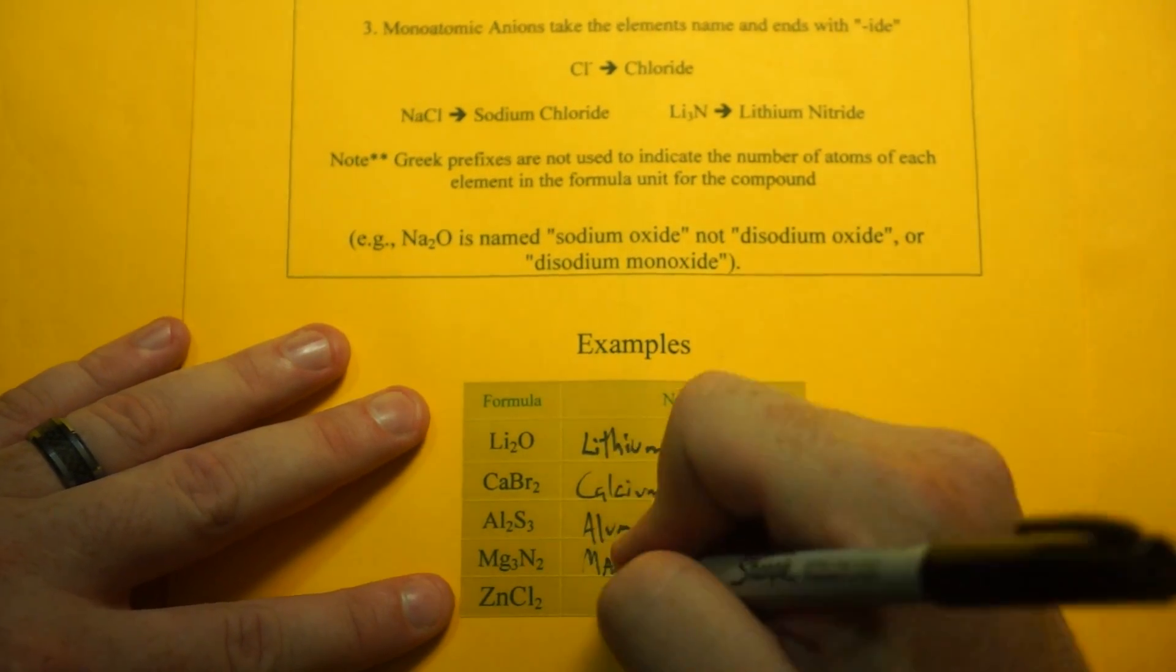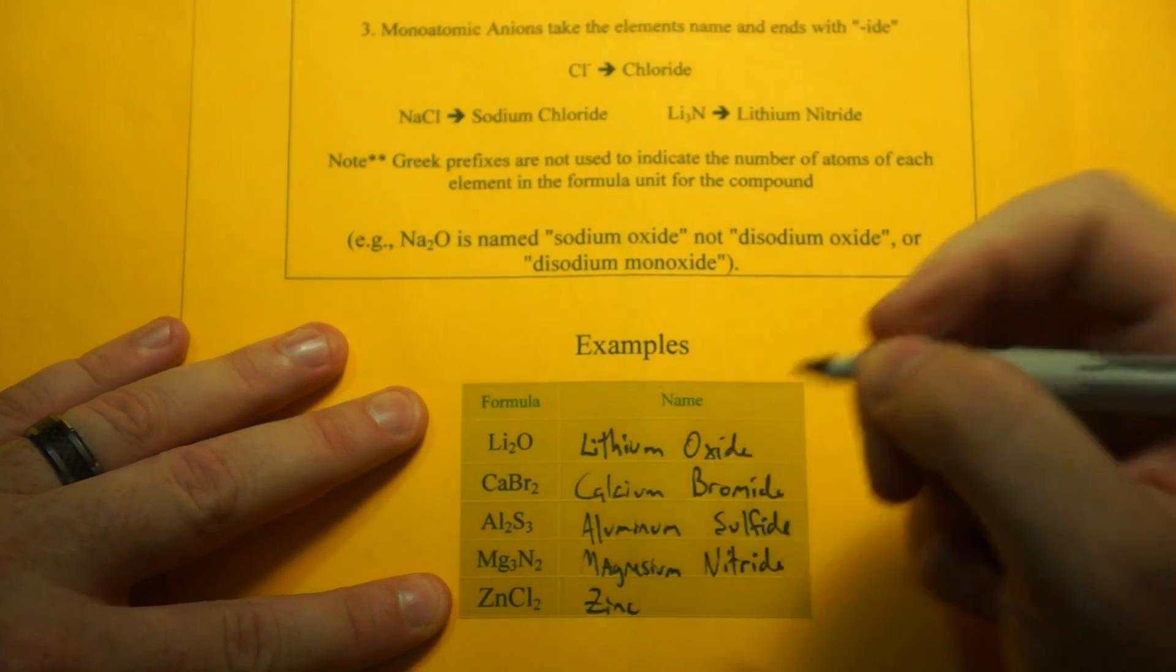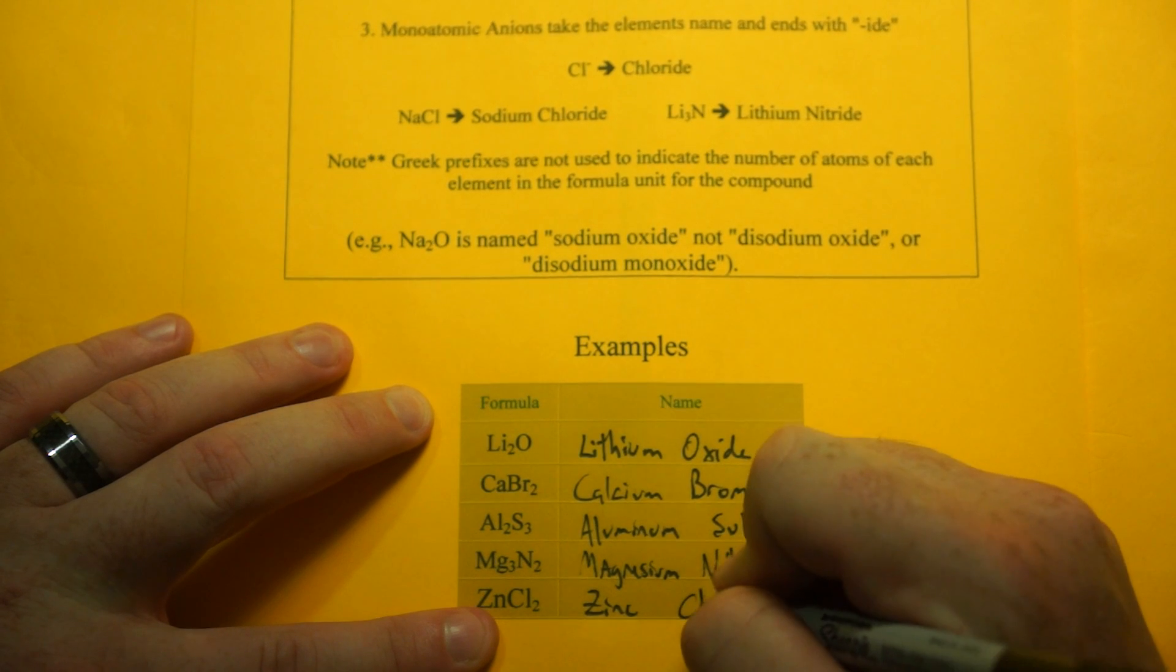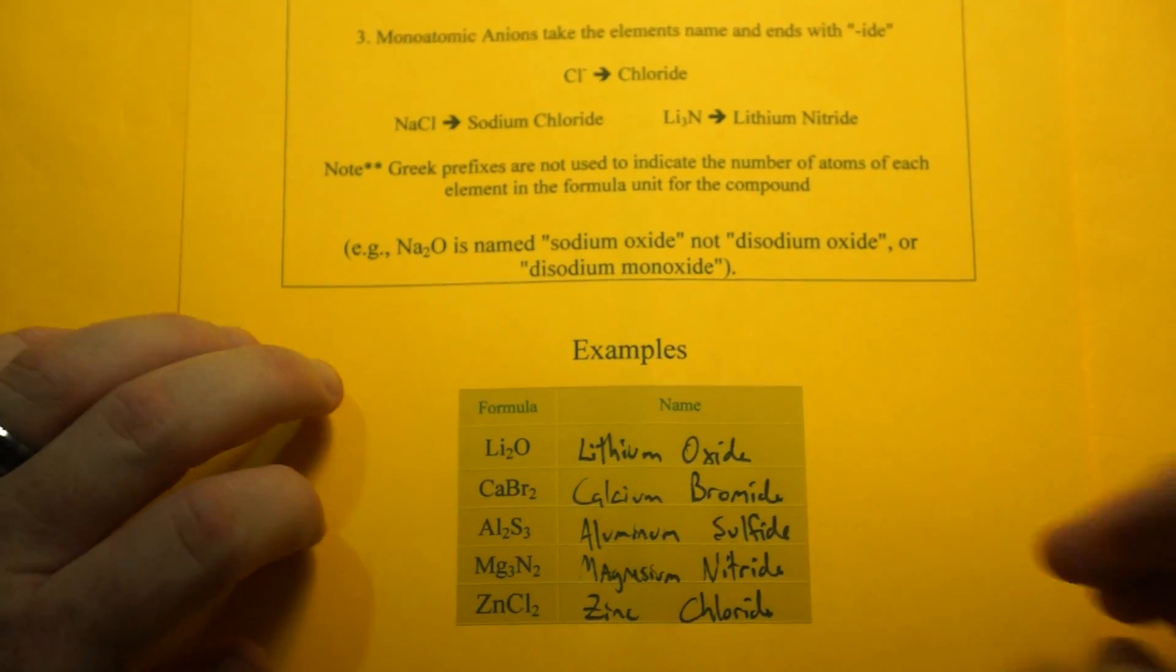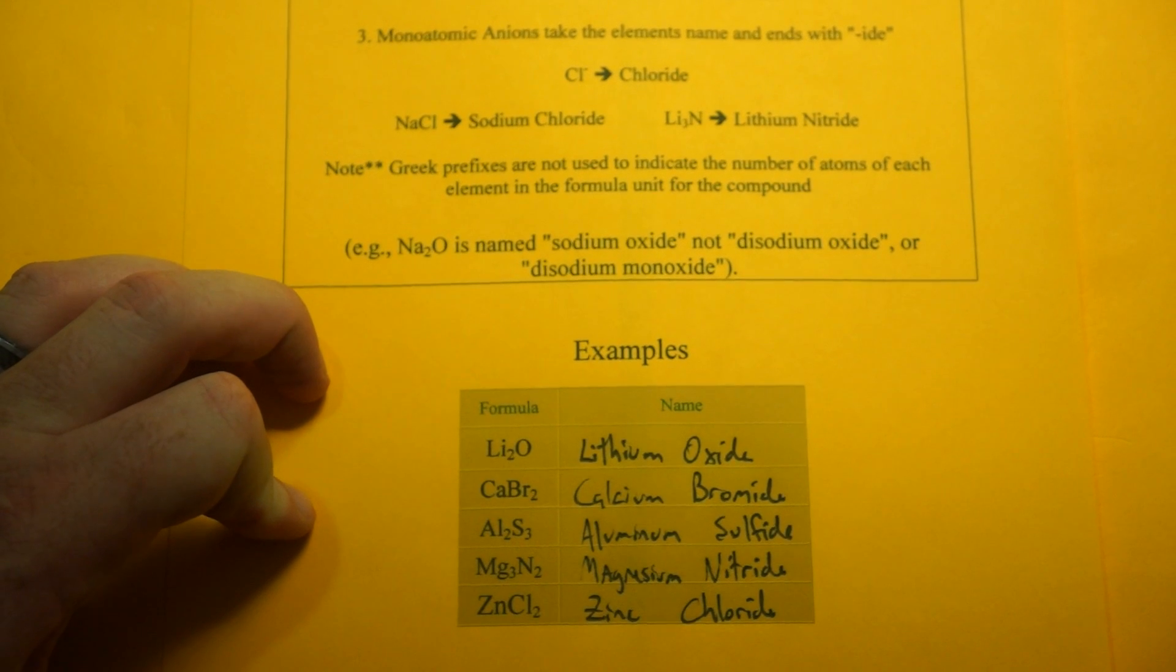And ZnCl, Zn is zinc, and chlorine turns into chloride, and that's how you name binary ionic compounds using the stock system.